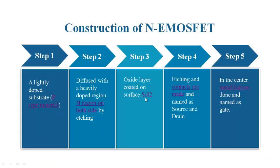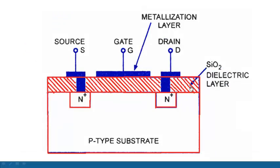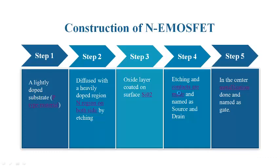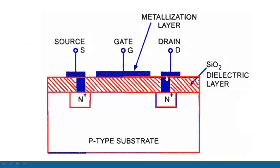With the p-type substrate and n+ regions done, next you coat SiO2 over the p-type material. The SiO2 is a dielectric. Once the coating is done, next you make contacts — again by the UV light process, you remove the SiO2 in those regions and place metal contacts. One n+ region you mark as source and the other n+ region you mark as drain. Drain will always be at higher potential, so drain to source — but conventionally electrons flow from source to drain.